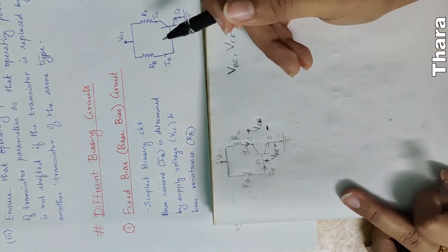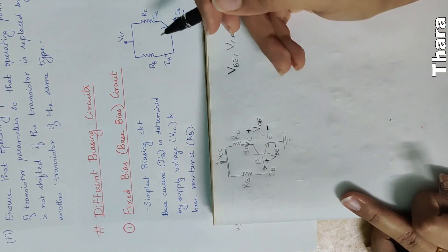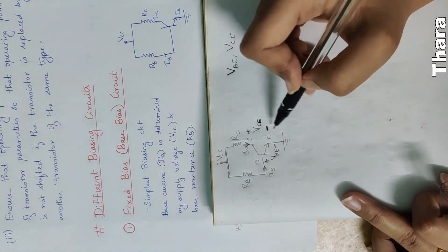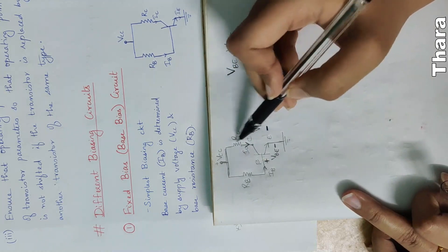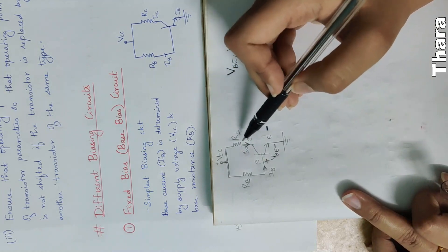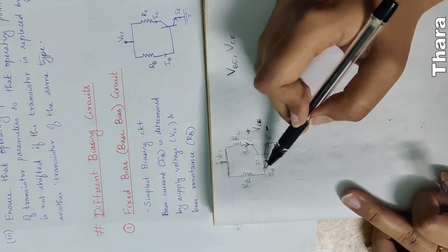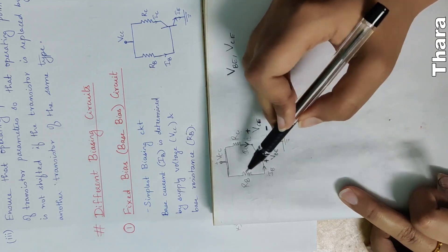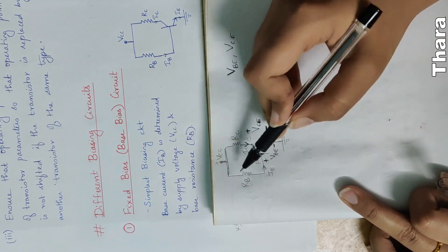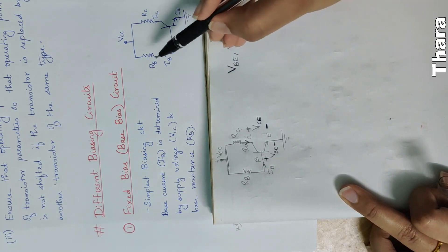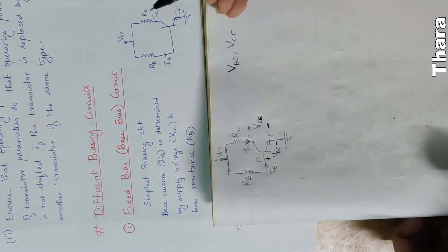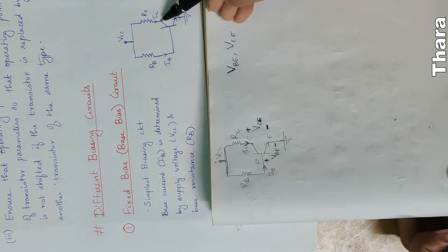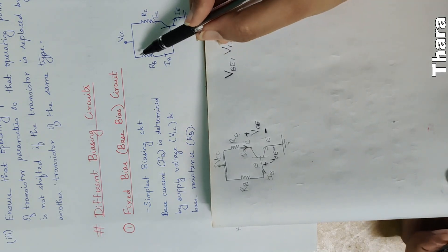In the equation we will write KVL. This resistance has a cross voltage. Base current IB is flowing through RB. RC also carries IC flowing. The current is flowing from top to bottom.